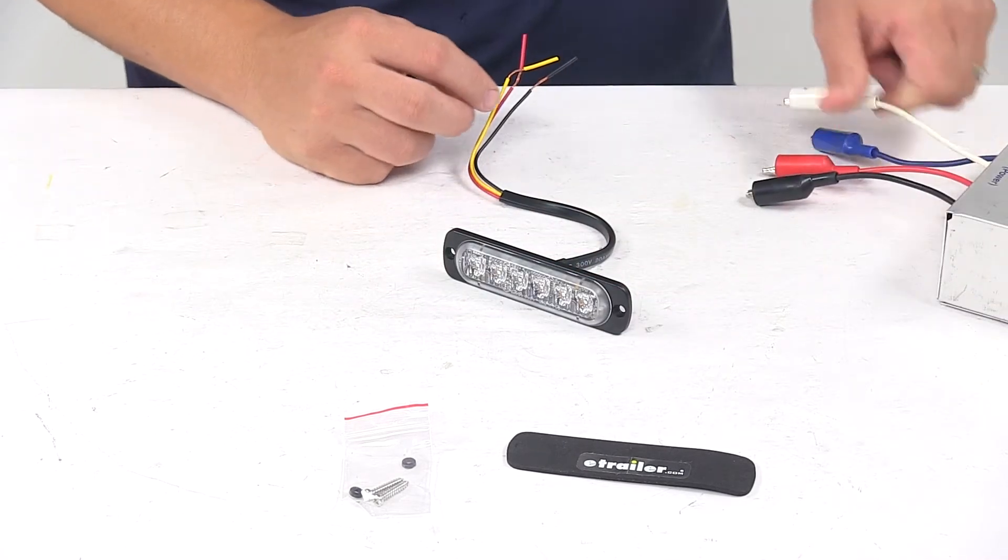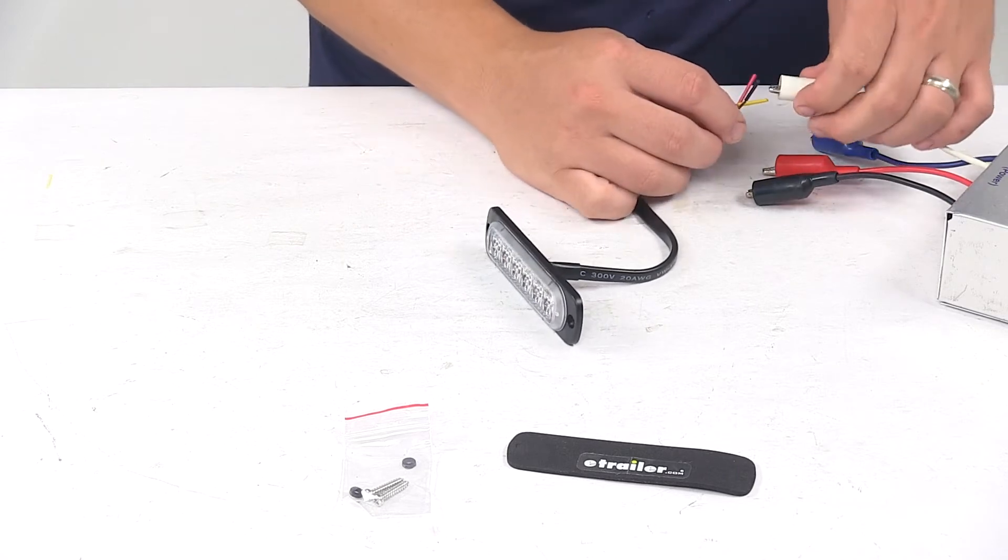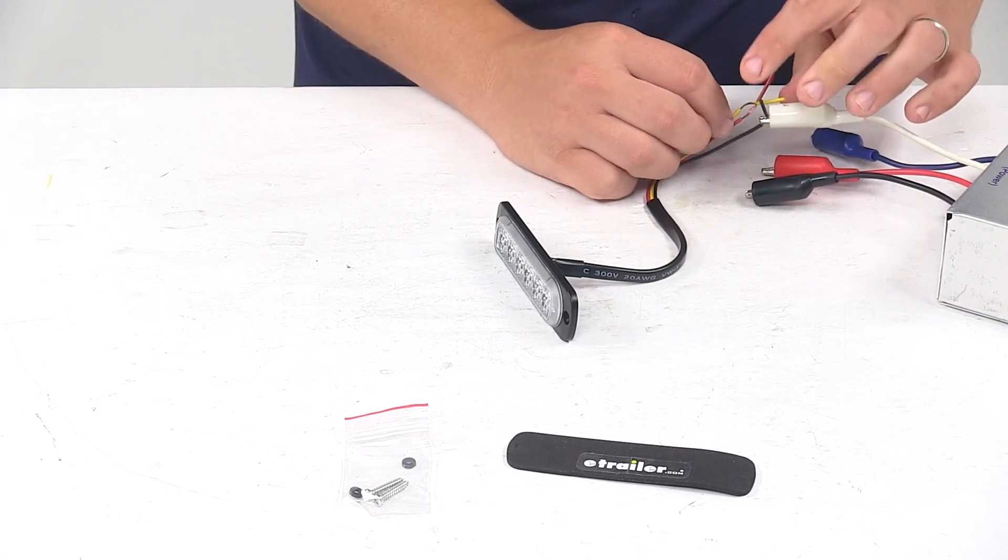We're going to go ahead and hook it up to power. That way you can see what it looks like with some power running to it. And then we'll also turn off our overhead lights so you can see it in a lower light setting.